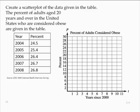Create a scatter plot of the data given in the table. The percent of adults aged 20 years and over in the United States who are considered obese are given in the table, for the years 2004 through 2008, with corresponding percentages from the CDC 2008 National Health Interview Survey.